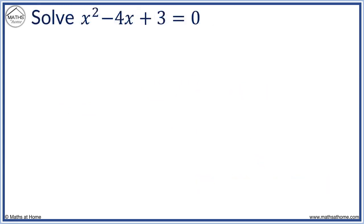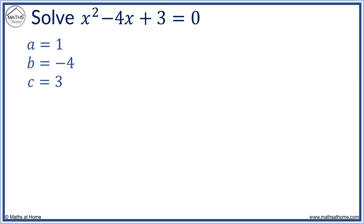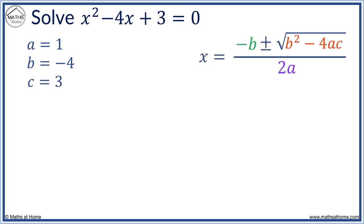Here we solve x squared minus 4x plus 3 equals 0. a is the coefficient of x squared, which is 1. b is the coefficient of x, which is minus 4. And c is the constant term, which is 3. Here is the quadratic formula. We need to work out minus b, b squared minus 4ac, and 2a.